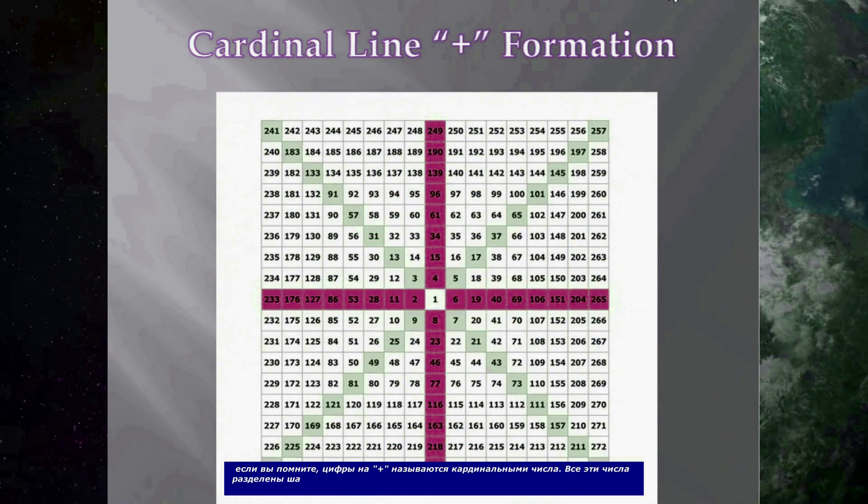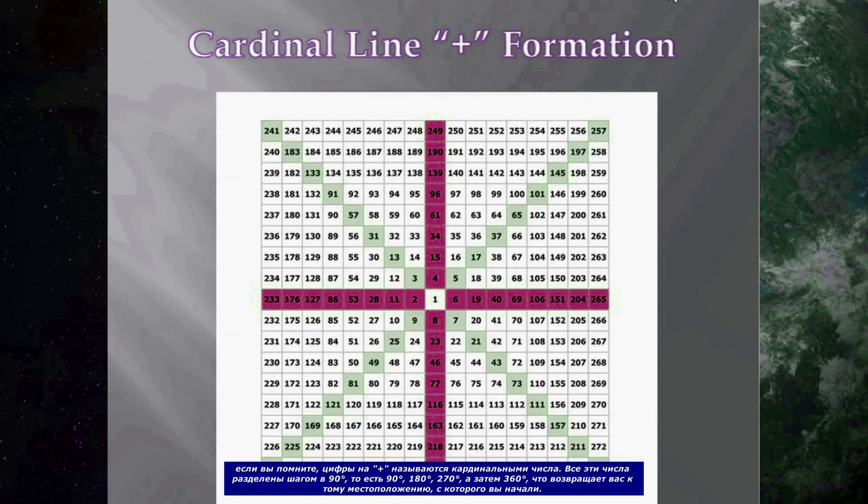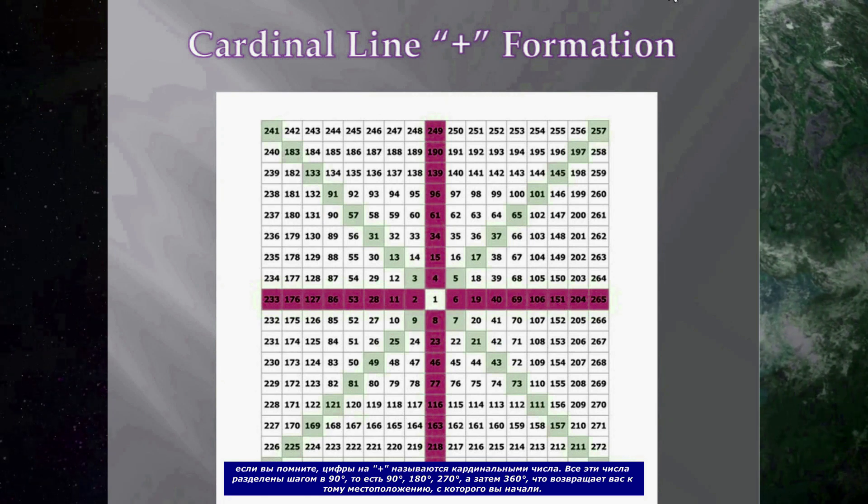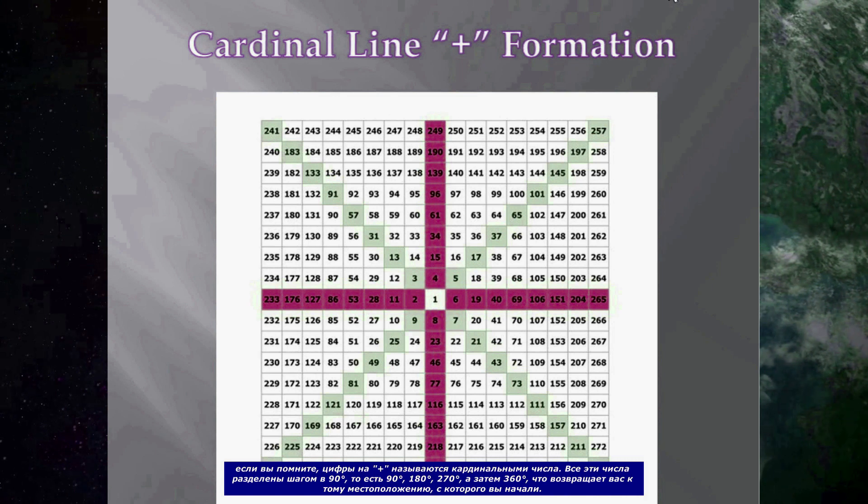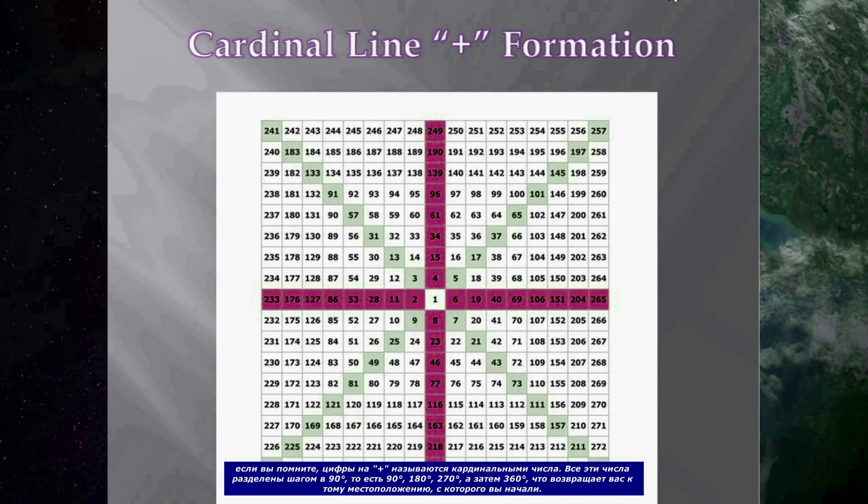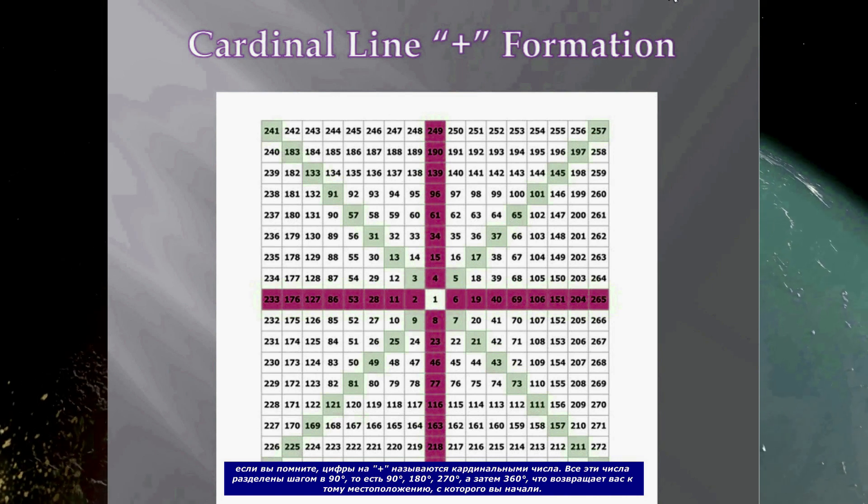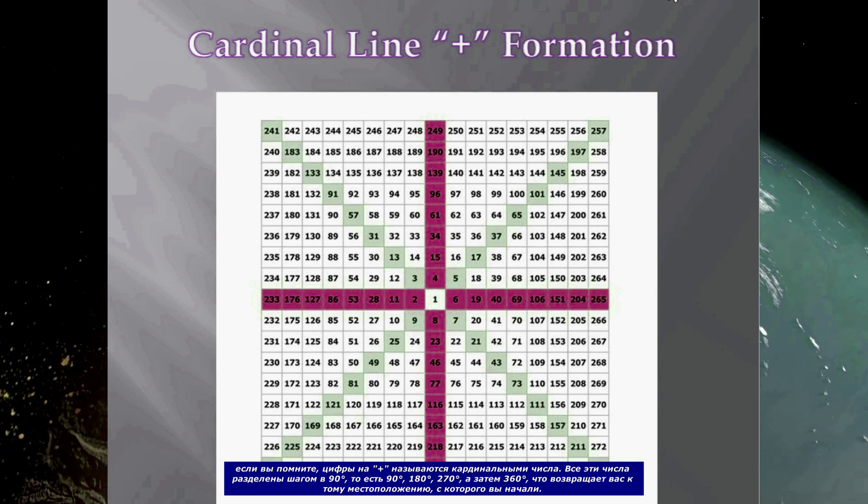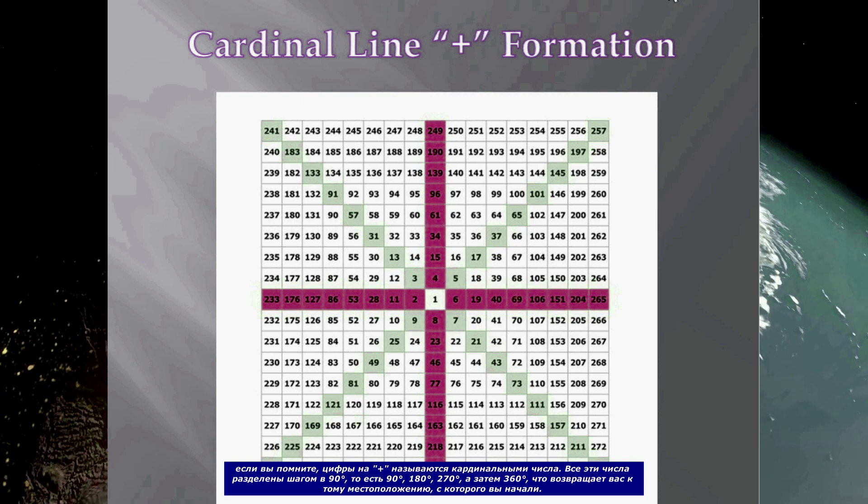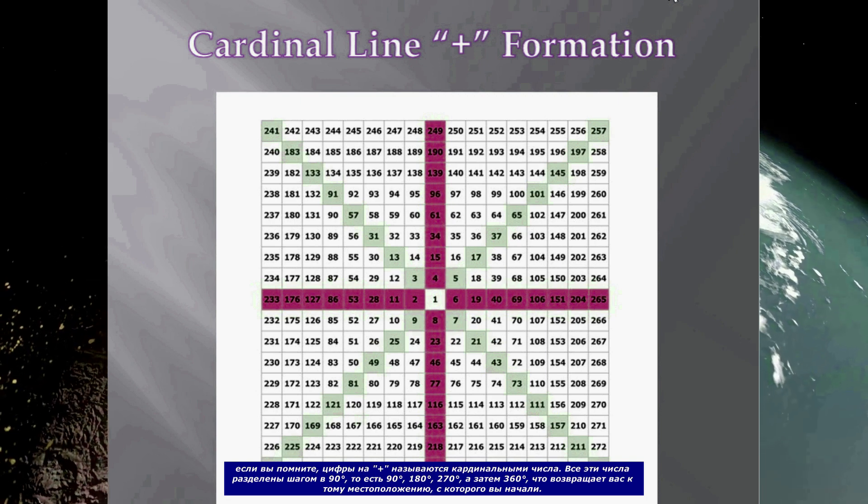If you remember, the numbers on the plus are called the cardinal numbers. These numbers are all separated by increments of 90 degrees, i.e. 90 degrees, 180 degrees, 270 degrees and then 360 degrees, which brings you back to the location that you started from.